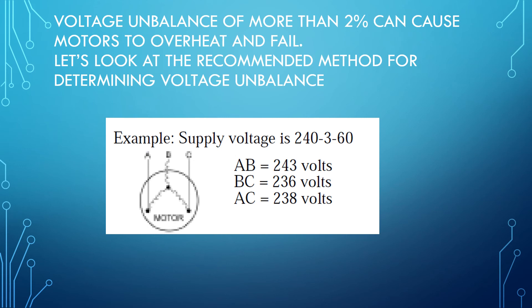In our example, supply voltage is 240 three-phase. From A to B, we read 243 volts. From B to C, we read 236 volts. From A to C, we read 238 volts.